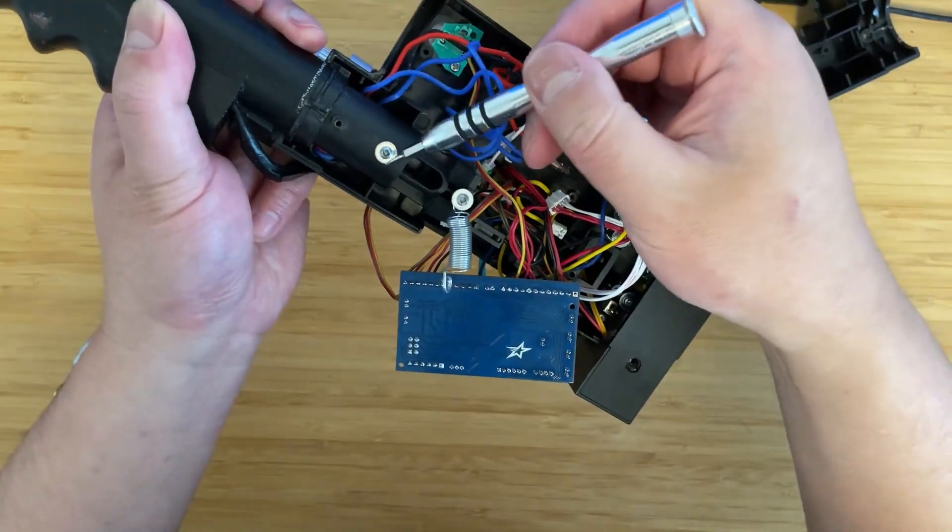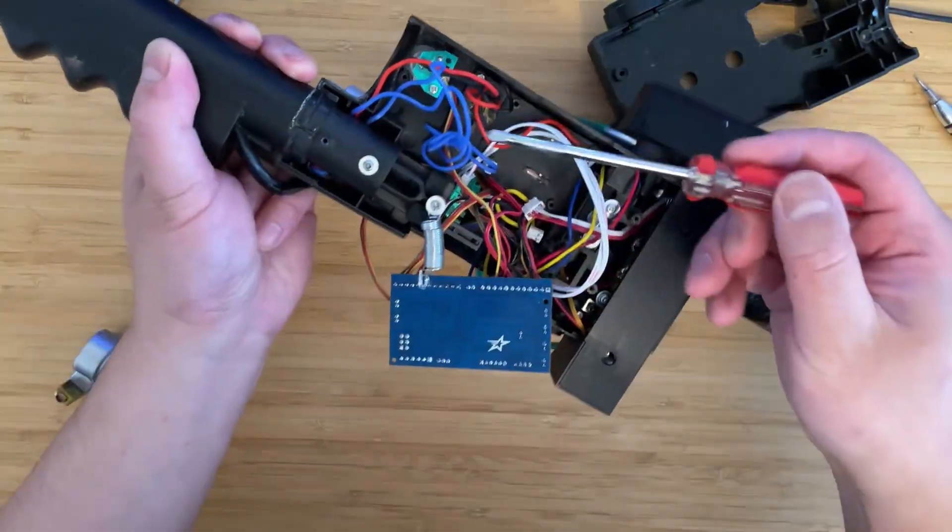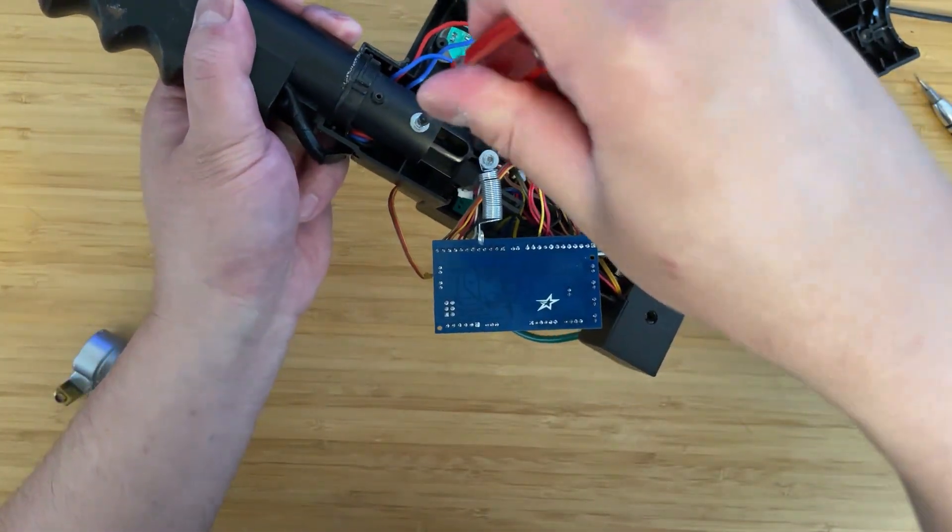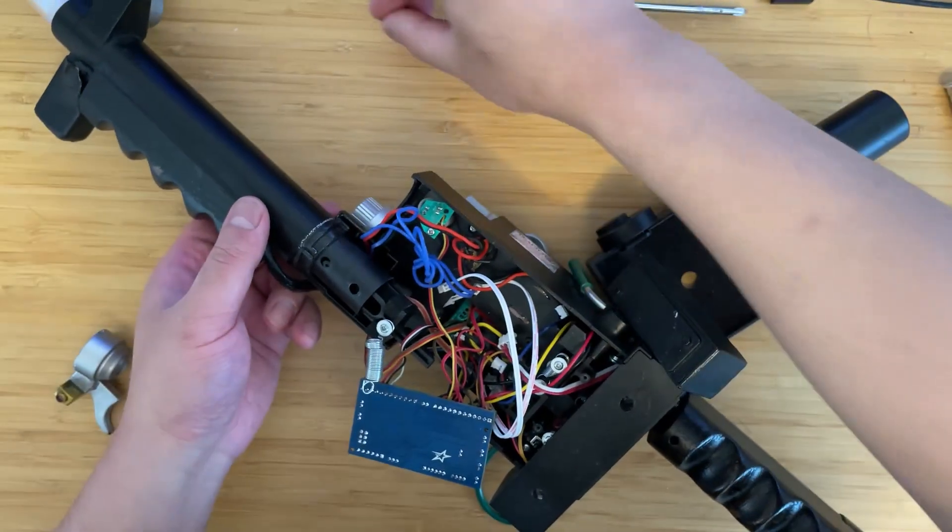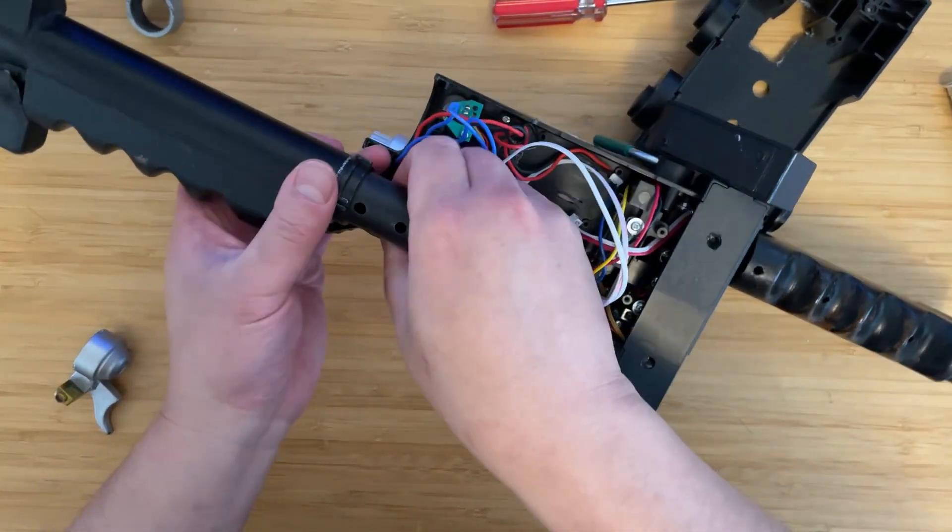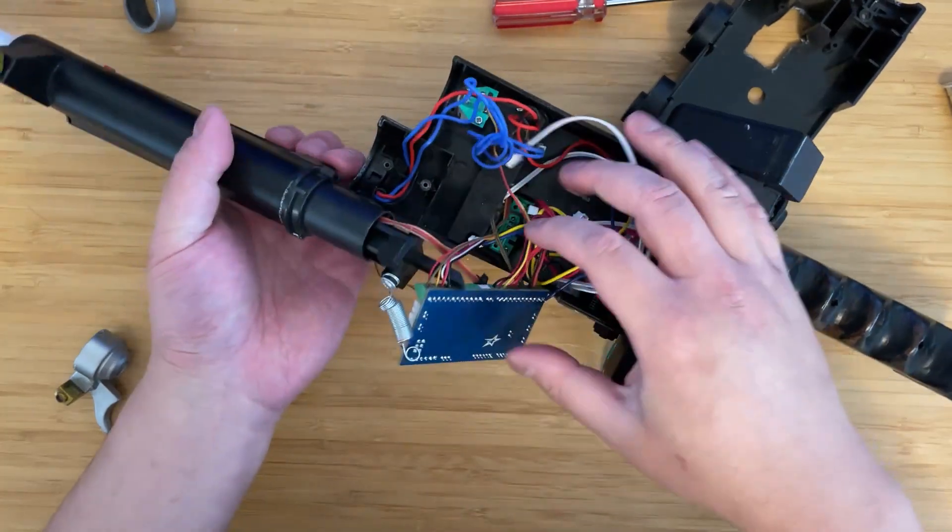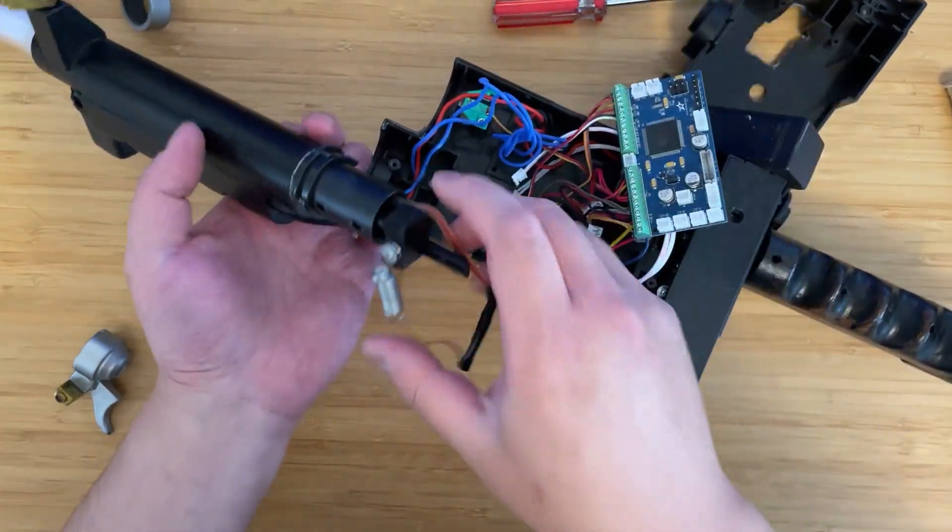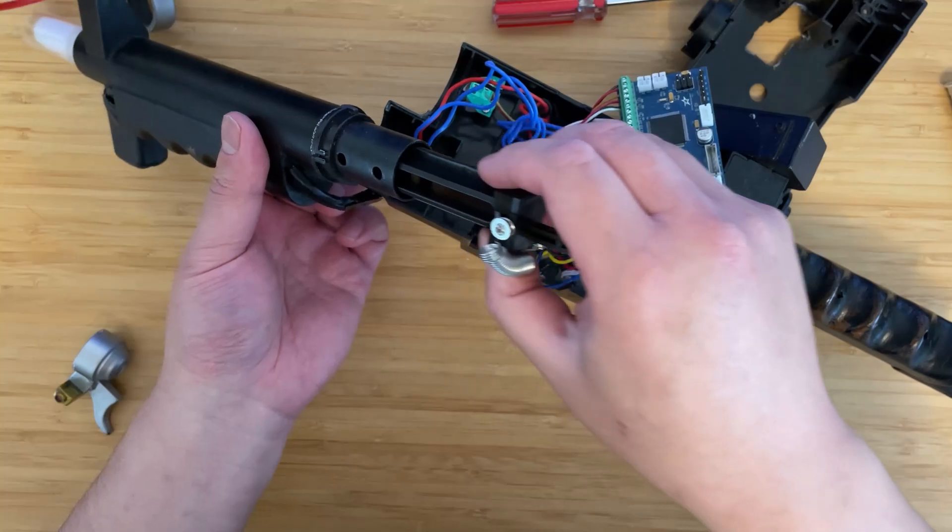Lift off the spring. It reveals a screw underneath. Take a screwdriver, unscrew that, and then lift this up. And now you can take the barrel.